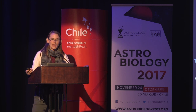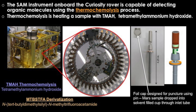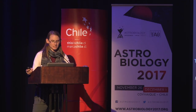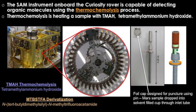The SAM instrument on board the Curiosity rover is capable of detecting organic molecules using a couple of different processes. The one I'm going to focus on today is called thermolysis — specifically heating a sample with a reagent, in this case TMAH, tetramethyl ammonium hydroxide. Inside the SAM carousel are 74 sample cups to accept samples for GCMS analyses, evolved gas analyses, and some of these thermolysis and derivatization experiments.